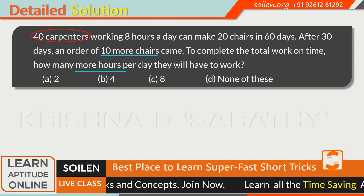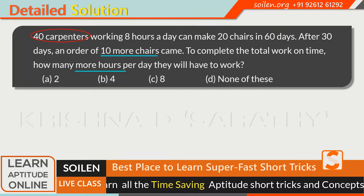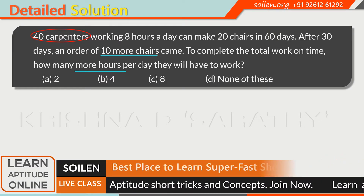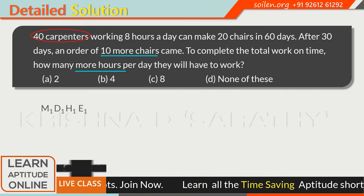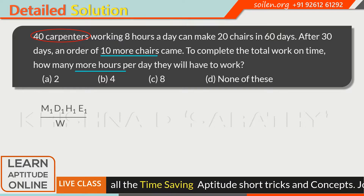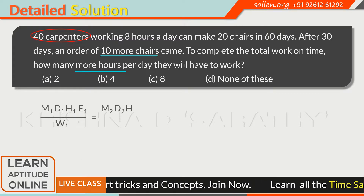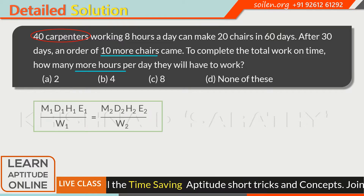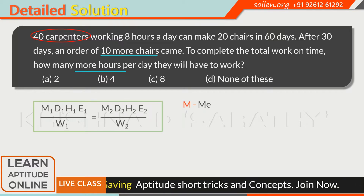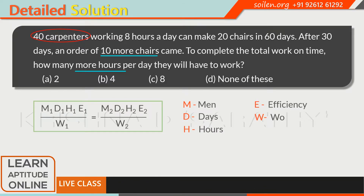You will find this question very easy. We can solve this very easily with the help of this formula: M1 × D1 × H1 × E1 / W1 = M2 × D2 × H2 × E2 / W2. Here M represents men, D days, H hours, E efficiency, and W work.